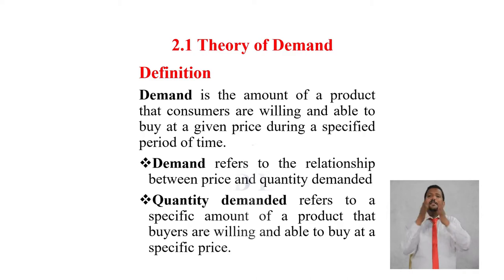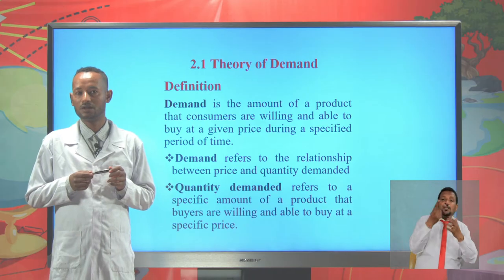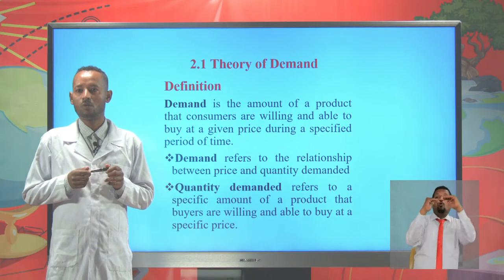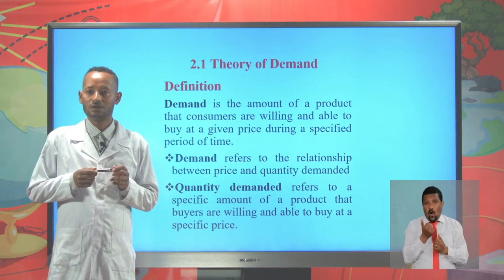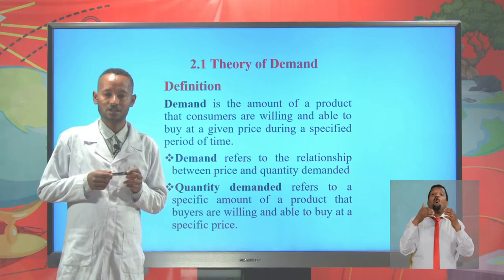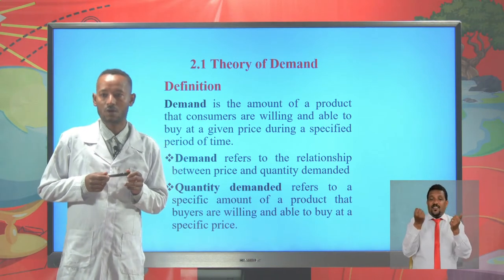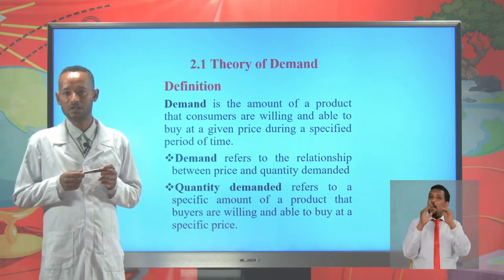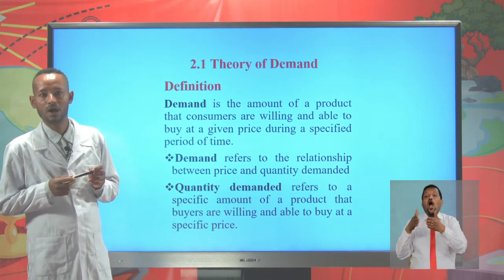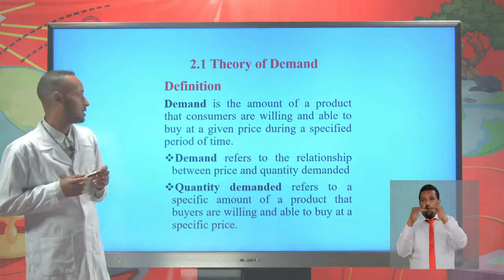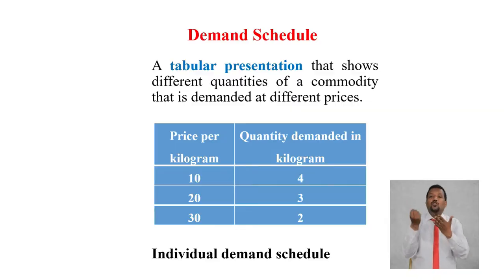Demand refers to the relationship between price and quantity demanded, while quantity demanded refers to a specific amount of commodities that buyers are willing and able to buy at a specific price.